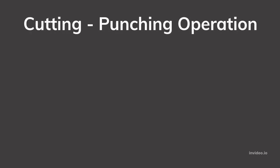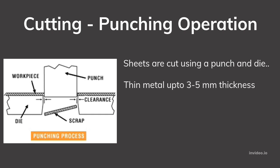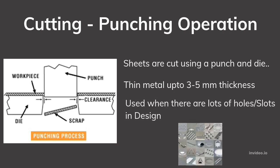Let's look into the punching process of sheet metal. Sheets are cut using punch and dies, just like shown in the picture. We can only punch metal up to 3 to 5 mm thickness. This process is normally used when there are lots of holes and slots.